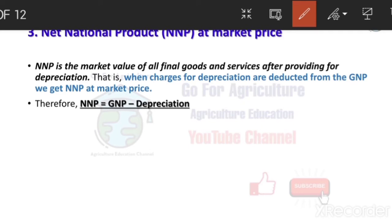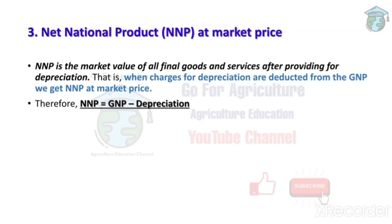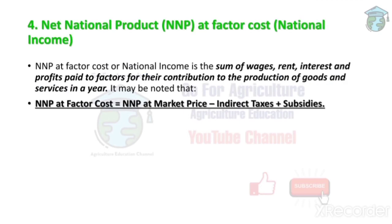So if GNP's value is X, then NNP's value will be X minus something — because we are including changes in NNP. If value increases, it will be X plus something; if value decreases, it will be X minus something. This is the major difference between GNP and NNP. Next is Net National Product at factor cost.